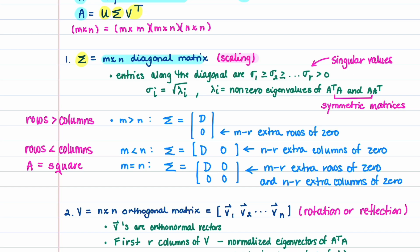The singular value decomposition of matrix A is equal to matrix U times matrix Sigma times the transpose of matrix V. When finding a singular value decomposition, the first matrix you need to find is matrix Sigma. Sigma is an m by n diagonal matrix — the same size as matrix A — and it represents a scaling transformation. Entries along the diagonal are sigma 1, sigma 2, all the way up to sigma r. These values are called singular values, and they're positive.